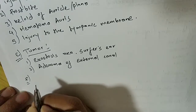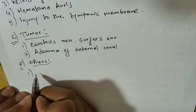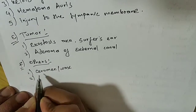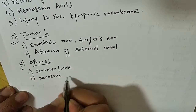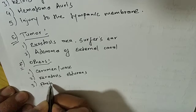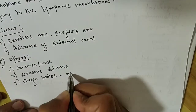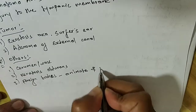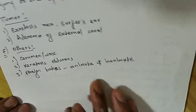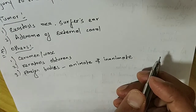The sixth condition is 'others.' Under this comes: cerumen or wax; keratosis obturans; and foreign bodies — which are animate and inanimate, meaning living and non-living. For example, animate may be some insects, and inanimate may be a pencil or any object.